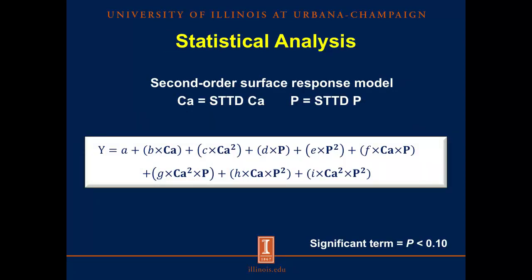For the statistical analysis, a second-order surface response model was used. This model includes the linear effect of calcium and phosphorus, the quadratic effect of calcium and phosphorus, and all interactions between linear and quadratic calcium and phosphorus. We started using the full model, but if a term or interaction was not significant, the model was reduced by removing the non-significant terms. Therefore, you will see some variables with the full model and some with a reduced model. Note that anytime I say calcium, I mean standardized total tract digestible calcium, and the same for phosphorus.